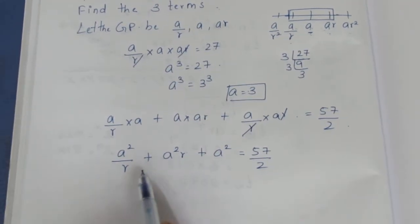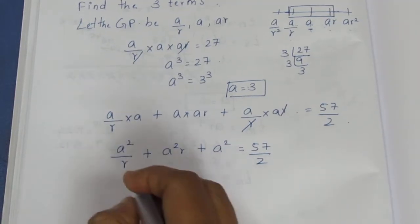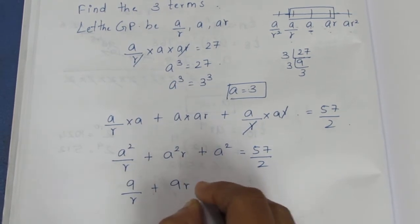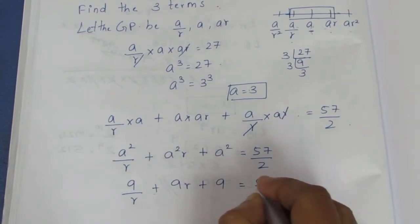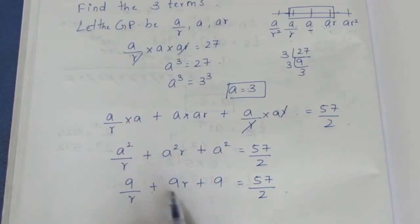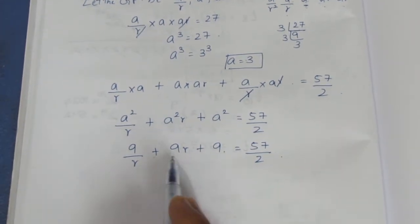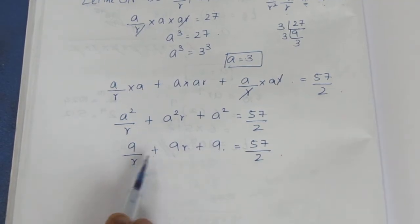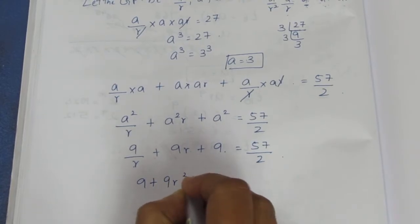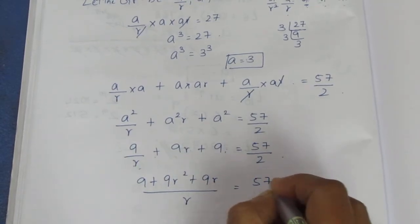Substituting A equal to 3: 3 squared is 9. So 9 by R plus 9R plus 9 is equal to 57 by 2. Multiplying through by R gives 9 plus 9R squared plus 9R, and this is equal to 57 by 2. Multiply both sides by R to get 9R by R equal to 57 by 2.